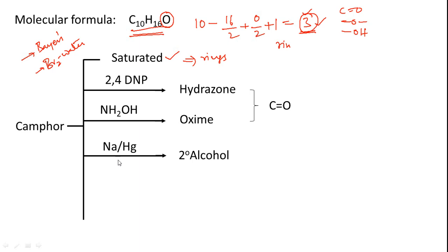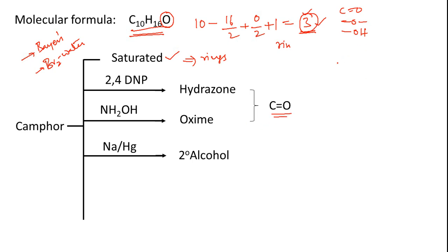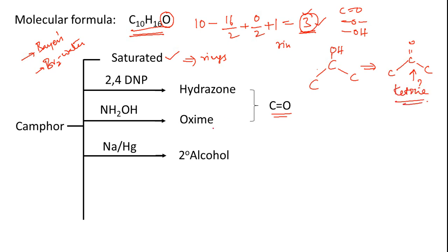The compound was then reduced with sodium amalgam to obtain a secondary alcohol. How can you get a secondary alcohol from a carbonyl carbon? A secondary alcohol is C-OH connected to two carbons. This is obtained after reduction of C=O-C, which means the compound is a ketone, not an aldehyde. An aldehyde would have given a primary alcohol upon reduction.